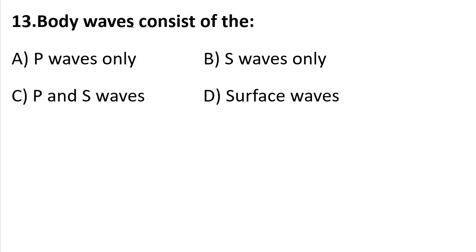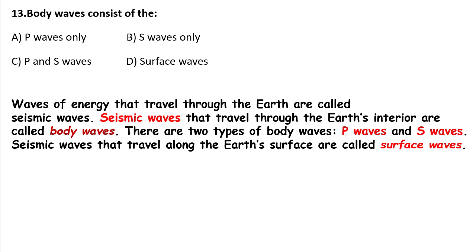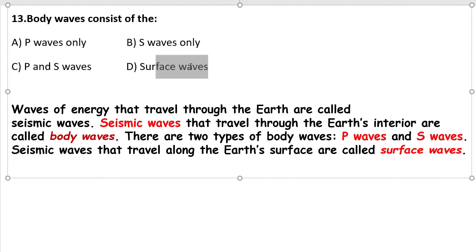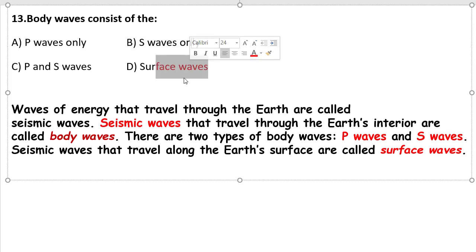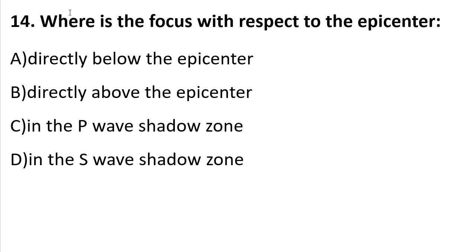Question 13: Body waves consist of — A) P waves only, B) S waves only, C) P and S waves, D) Surface waves. Waves of energy that travel through the Earth are called seismic waves. Seismic waves that travel through the Earth's interior are called body waves, and there are two types: P waves and S waves. Seismic waves that travel along the Earth's surface are called surface waves. So the answer will be C — P and S waves.